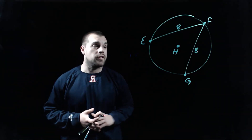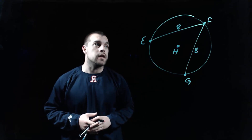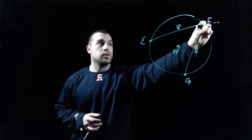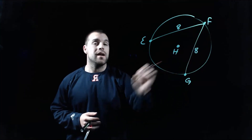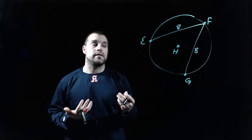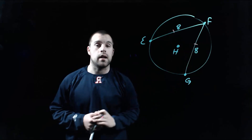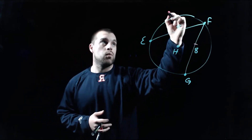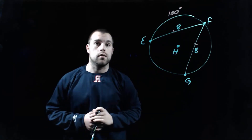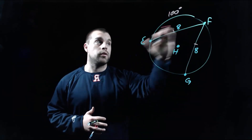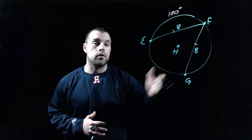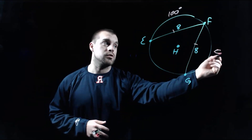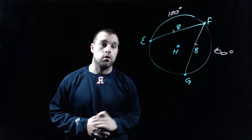This next example is along the same lines. We've got circle H with chord EF of length 8 and chord FG of length 8. Since these chords have the same length, they're automatically congruent. If arc EF is a 100-degree arc, then because chord EF is congruent to chord FG, arc FG also has to be a 100-degree arc.